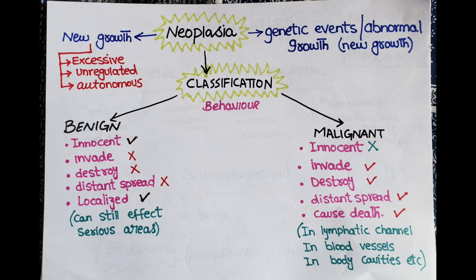Neoplasia is a series of genetic events starting at the subcellular level. The word neoplasia is a mixture of Greek and English, literally meaning 'new growth.' Abnormal or new growth means it is excessive (proliferative), unregulated (not under hormonal regulation), and autonomous (does not require any stimulus to start or grow).